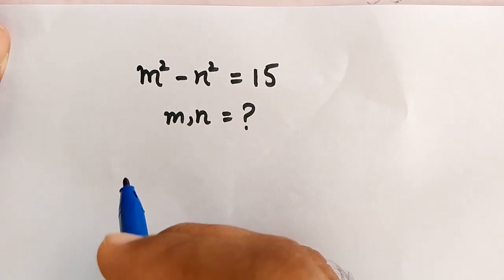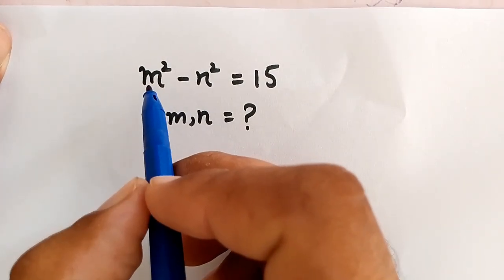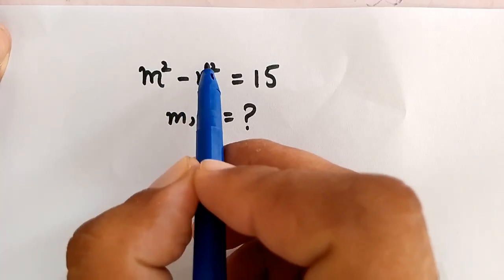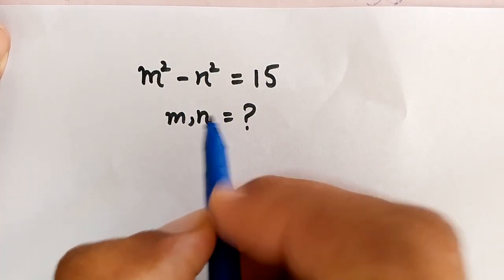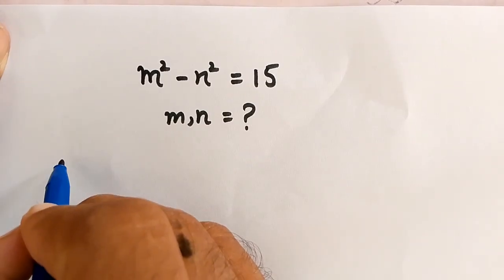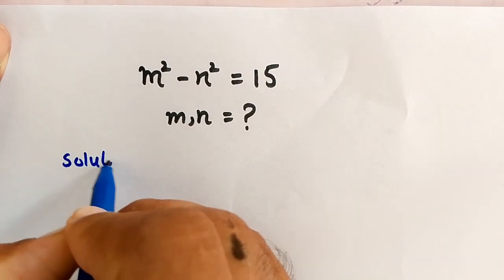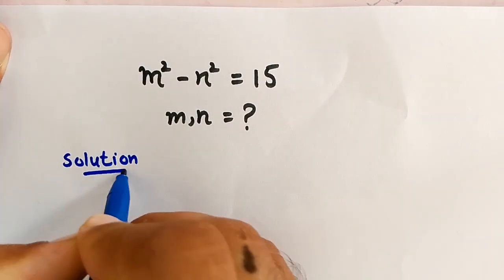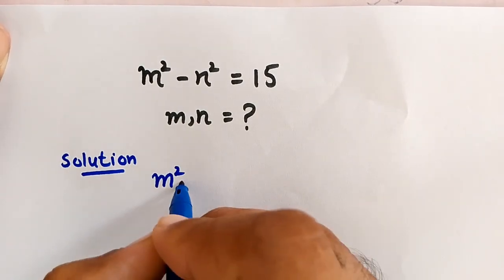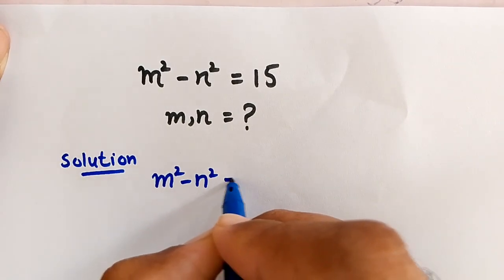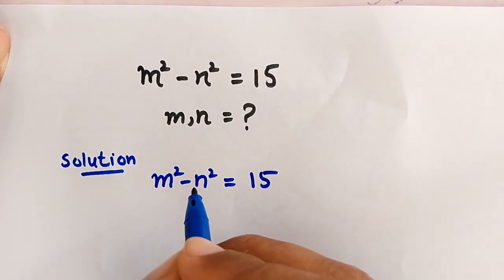Hello, you are welcome. Today we have to solve the math question: m squared minus n squared is equal to 15, and we have to find the value of m and n.